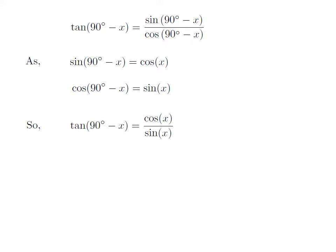Let's apply the above identities in the above expression of tangent of 90 degree minus x. So, tangent of 90 degree minus x is equal to cosine of x divided by sine of x.